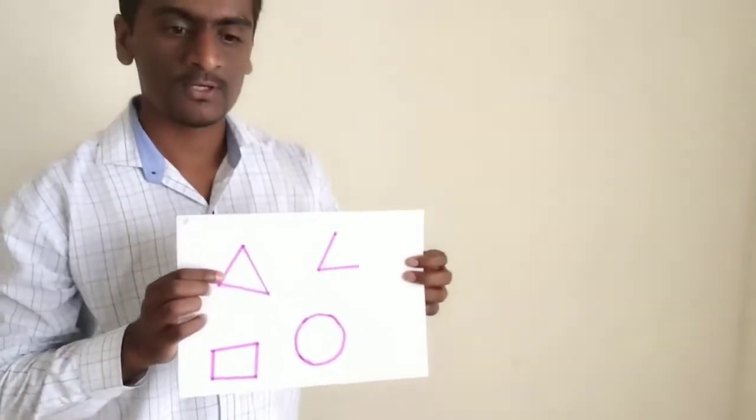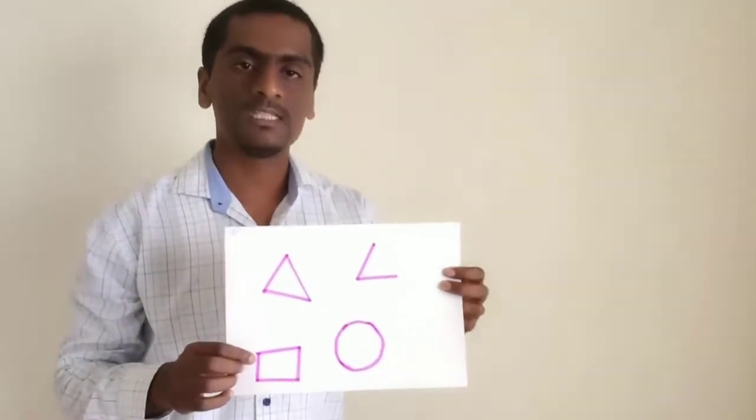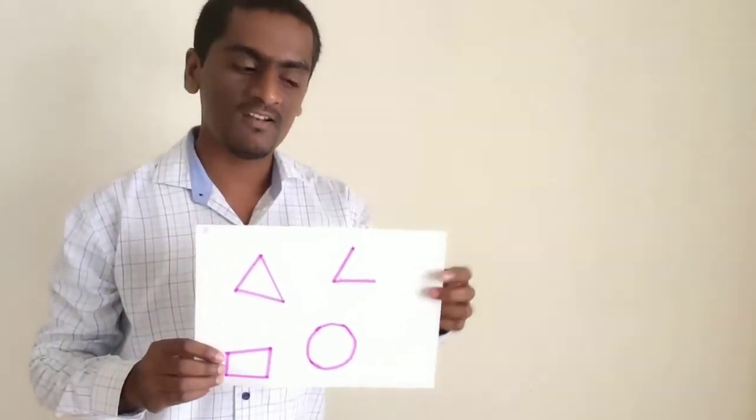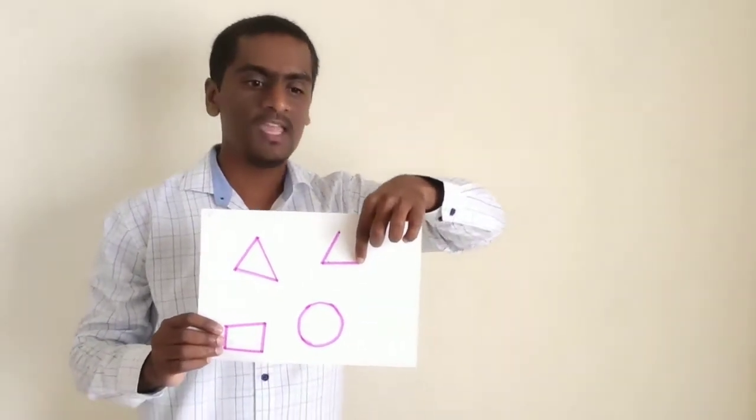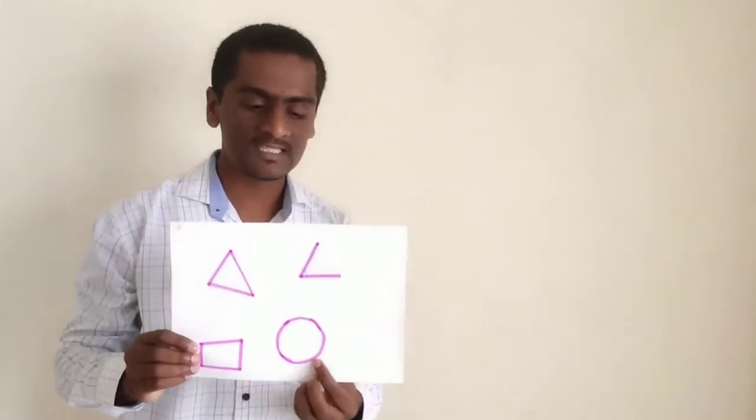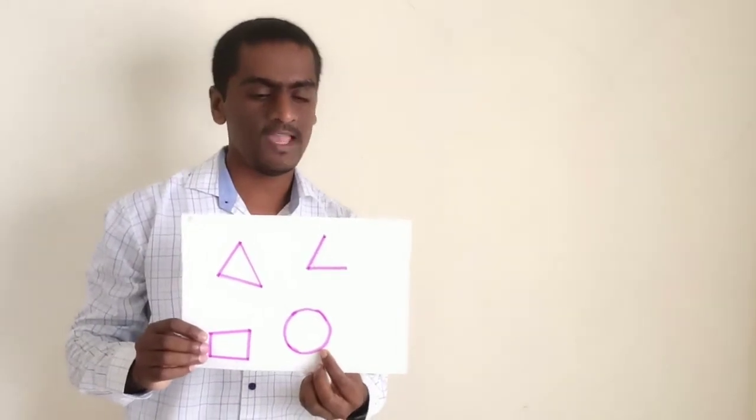Now tell me, what is this? Triangle. Very good. What is this? Quadrilateral. Very good. What is this? Angle. Very good. What is this? Circle. Very good.